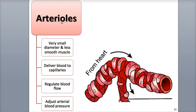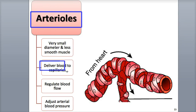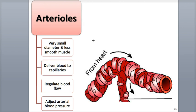Arterioles are microscopic arteries that deliver blood to the capillary beds located around the body's tissues and organs. They are incredibly abundant, numbering about 400 million. Their tunica interna is thin, and their internal elastic lamina is fenestrated, meaning it contains small pores.